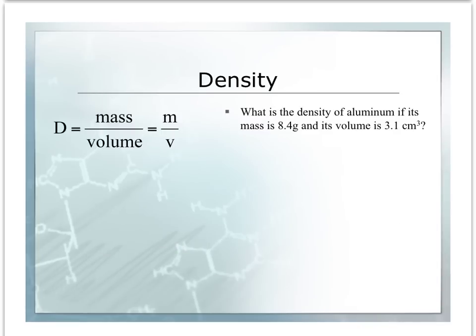Here's our density formula, mass divided by volume. Our problem is: what is the density of aluminum if its mass is 8.4 grams and its volume is 3.1 cubic centimeters? We will be doing a lot of word problems in chemistry, so it's important you get used to a certain process. First, write down what the problem gives you. So your mass equals 8.4 grams, and your volume equals 3.1 cubic centimeters. Include your number and unit because they're measurements.